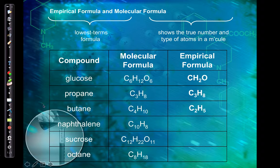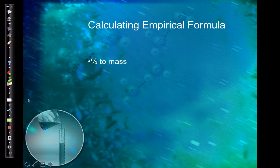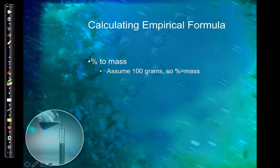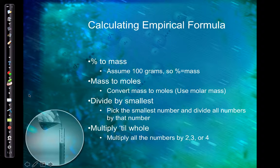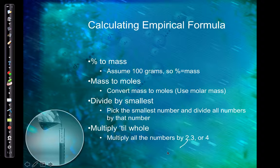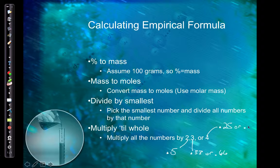To find the empirical formula from percent composition: first, assume 100 grams, so each percentage directly becomes grams. Then convert each mass to moles using the molar mass. Next — a step many people forget — divide each mole value by the smallest number of moles to get the ratio. If the results aren't whole numbers, multiply until whole: multiply by 2 for 0.5, by 3 for 0.33 or 0.66, and by 4 for 0.25 or 0.75.